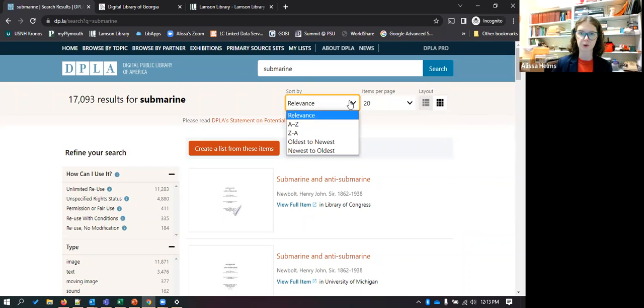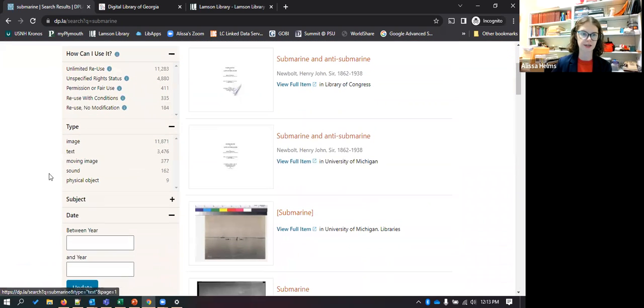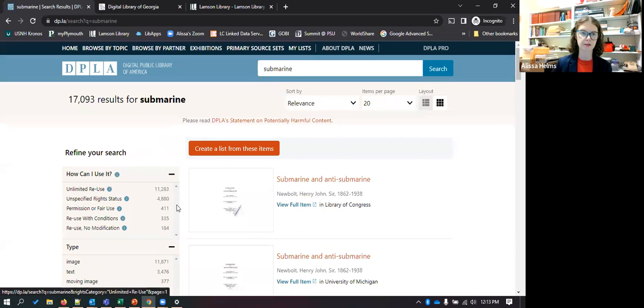So here are your results. Like I said, work with the tools that you've got. You can sort by relevance, news to oldest, A to Z. You've got your filters over here on the left, so if you want to just find images or just find text, or if you want to look at submarines within a certain time period you can do that, or a certain location. So lots of these interfaces have those type of tools and controls.